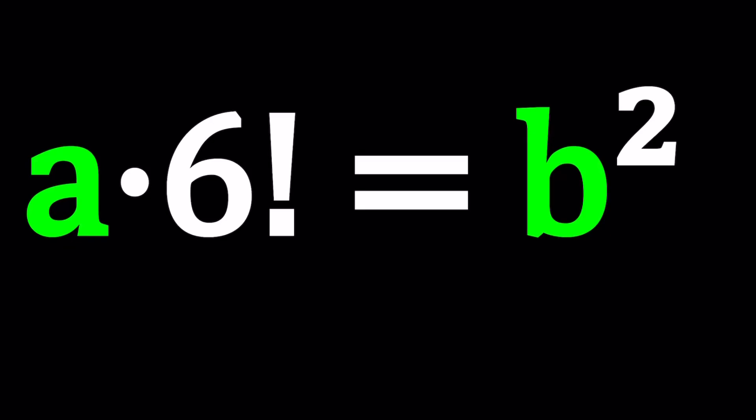Hello everyone. In this video we're going to be solving a nice number theory problem with factorials. We have a times 6 factorial equals b squared. a and b are integers. And we're going to be solving for a and b. Let's see how we can solve these kinds of problems.